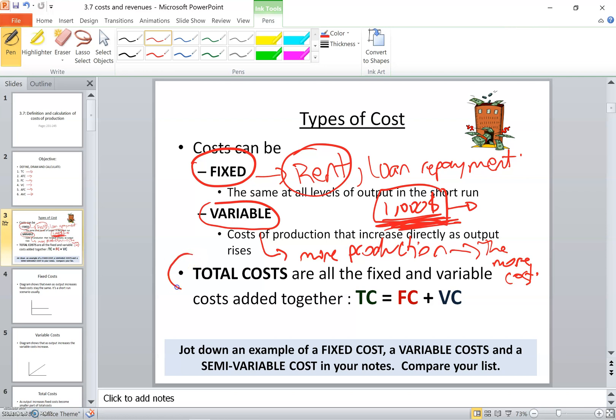Total cost takes into consideration both fixed and variable. So total cost is fixed cost plus variable cost.